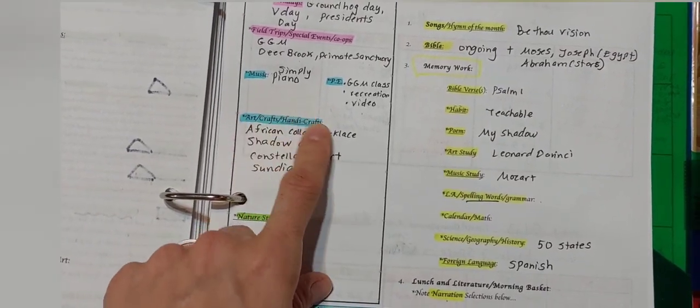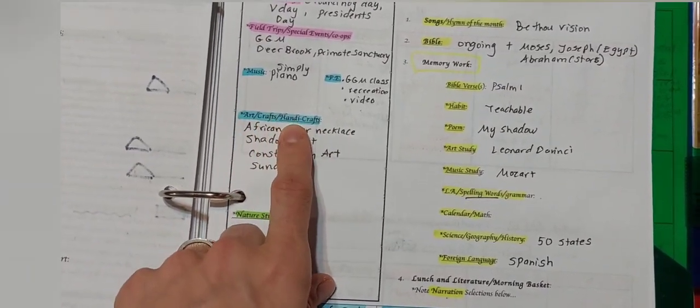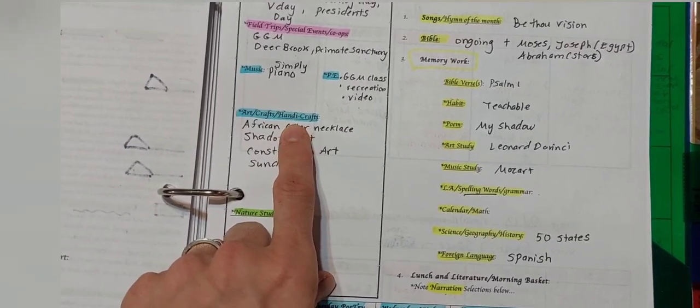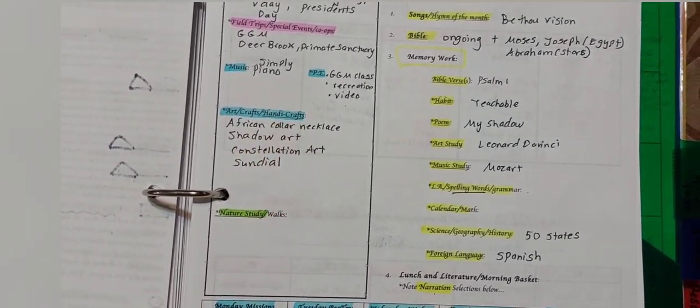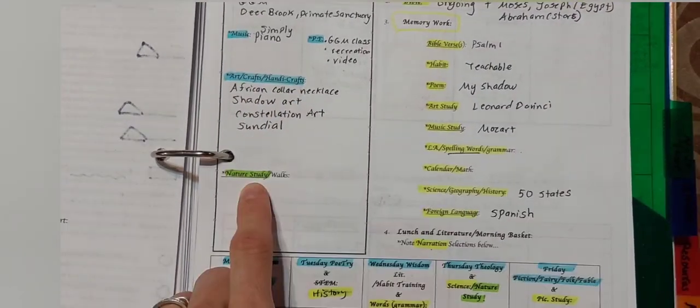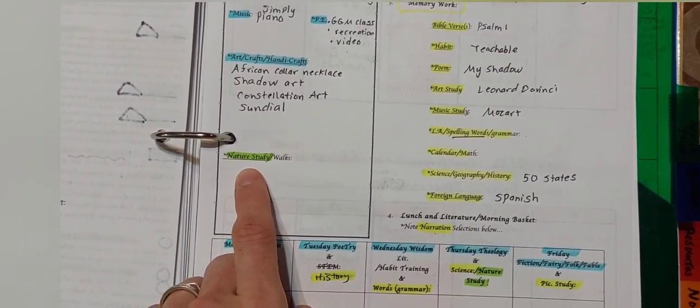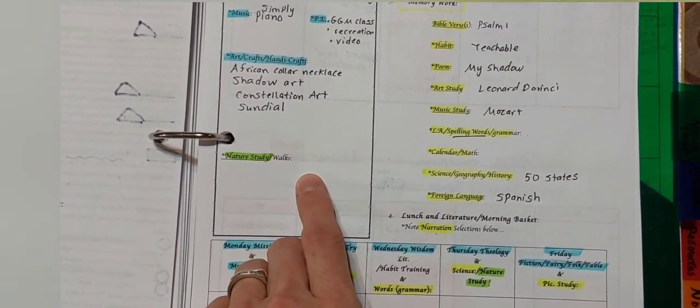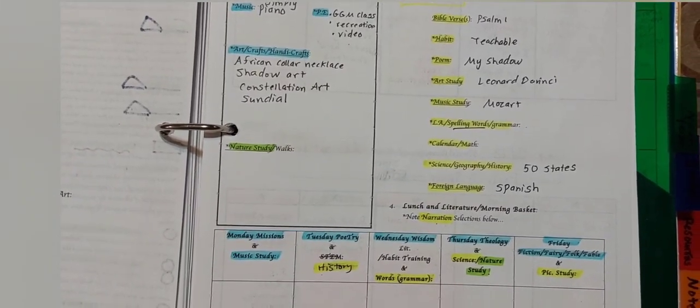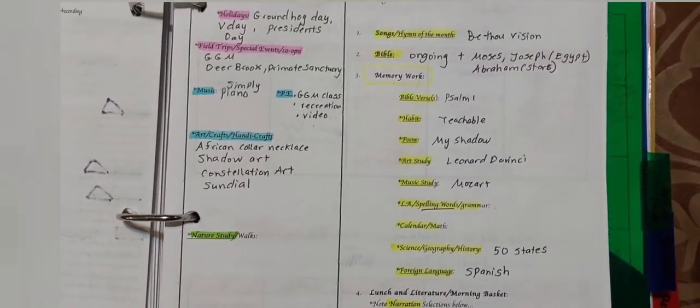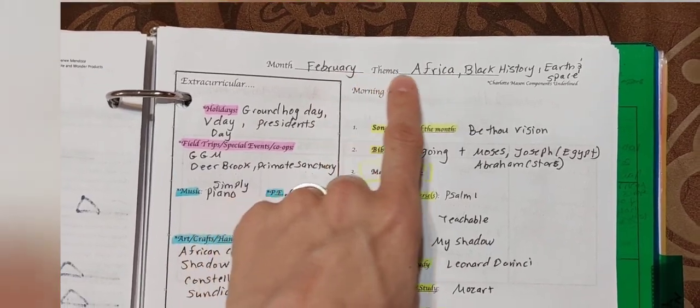This would be a good place to list either art things you did do or think you might do, and you could either check them off or do it in pencil and erase them. If you didn't do them, you could note here for nature study what dates you went on your walks and maybe any note of what things came to be a focus that relate to nature study. Up here, it's just your month and your themes.